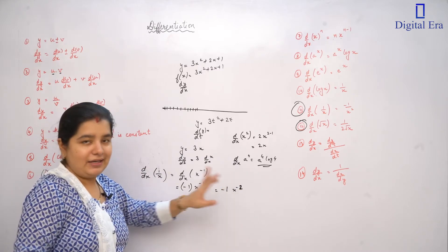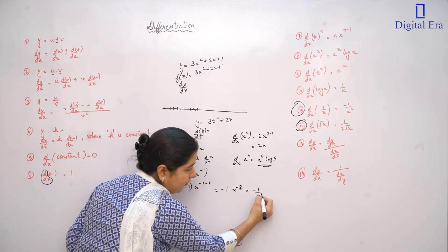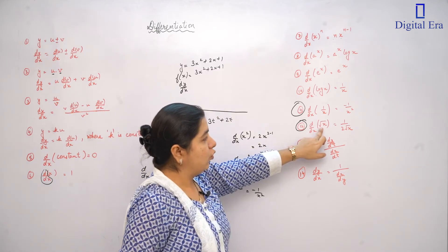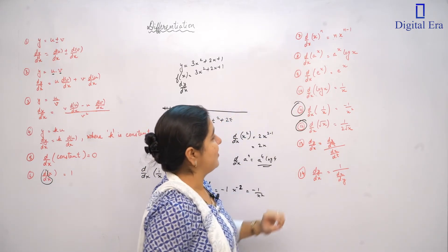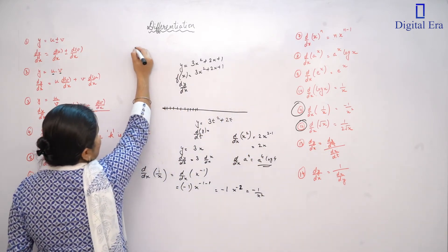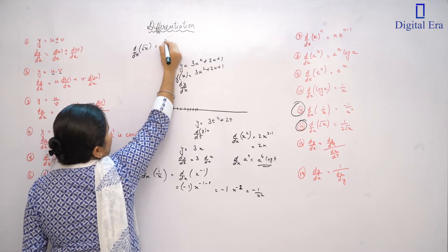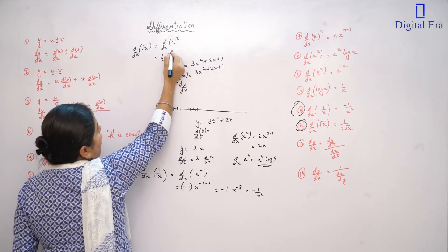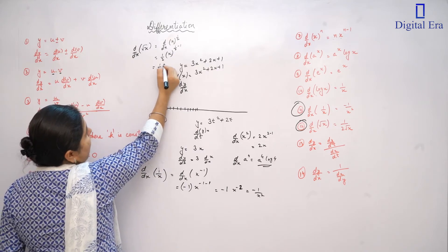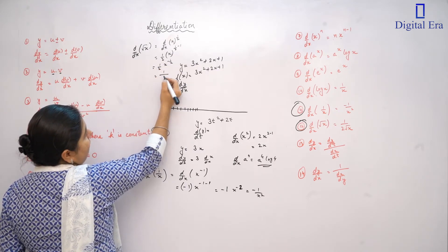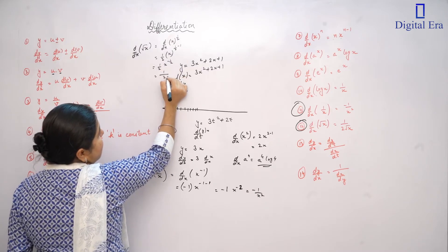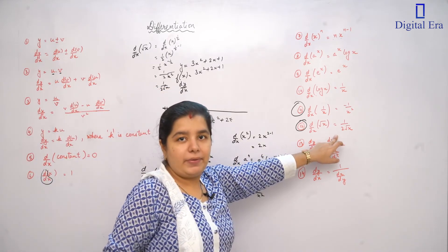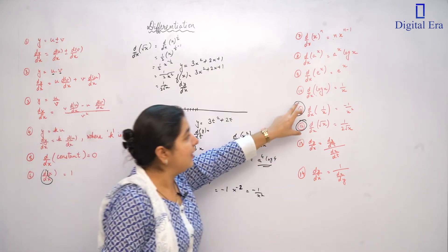So the derivative of 1/x is minus 1 over x squared. Next, d/dx of root x — square root of x. We write root x as x to the power 1/2. Bringing the power forward gives 1/2 times x to the power minus 1/2, which equals 1 over 2 root x. This is a direct formula that will be useful because questions will frequently use it.